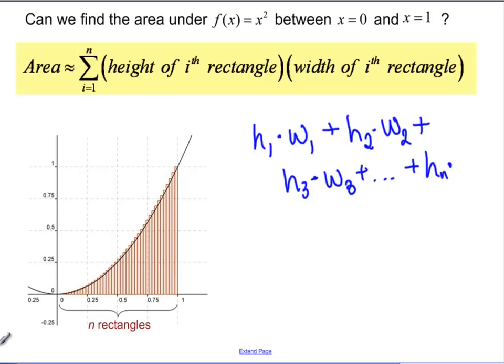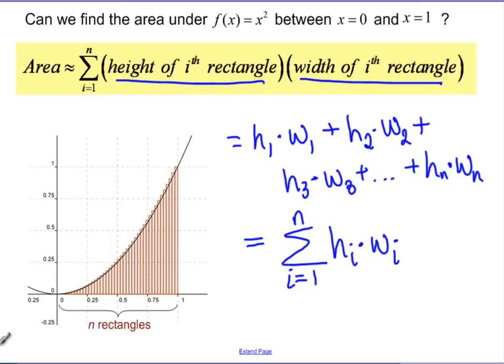So height of rectangle n times width of rectangle n. Can I write that using sigma notation? The answer is yes. It'll be the sigma, i starting at 1 and going to n, of h sub i times w sub i. So height of rectangle i times width of rectangle i.